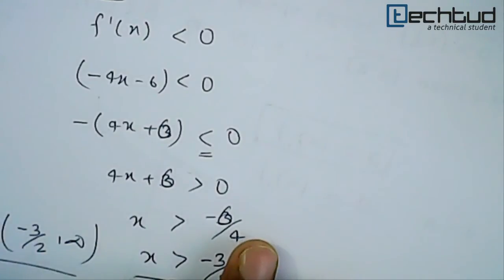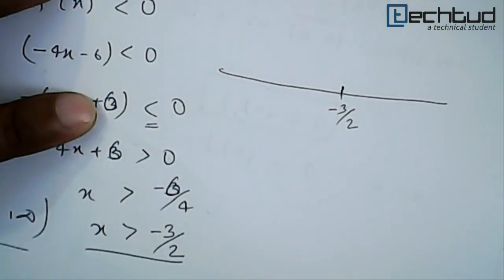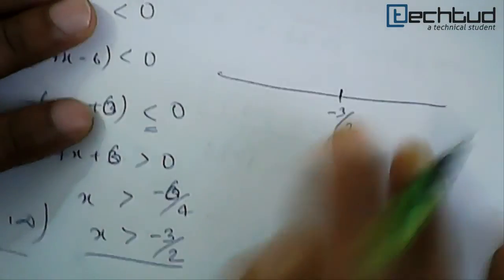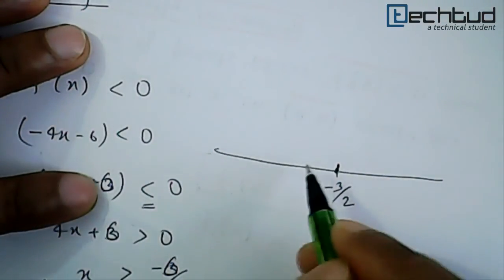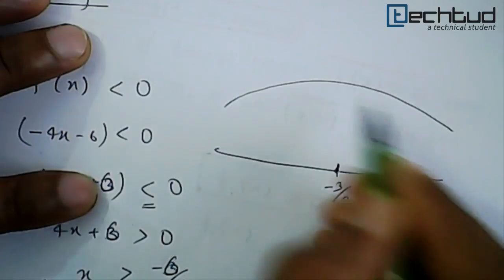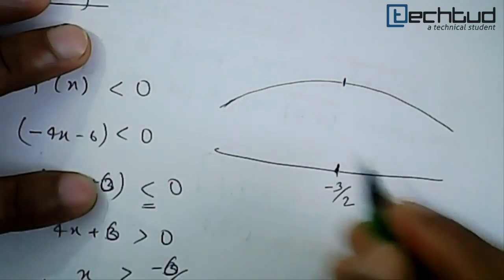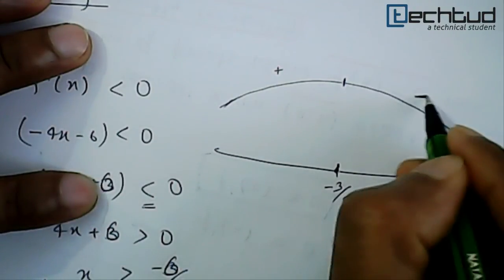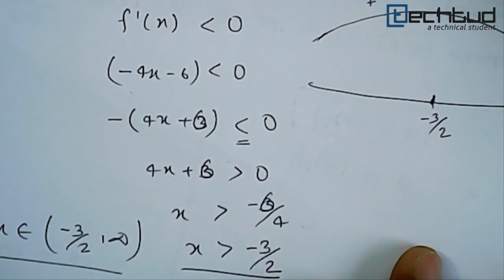So the function is basically changing its nature at x equals minus 3 by 2. Up to minus 3 by 2 from minus infinity, it is of increasing nature, whereas after minus 3 by 2, it is of decreasing nature. That's how we solved the problem. Let's solve another example on this topic. Thanks for watching.